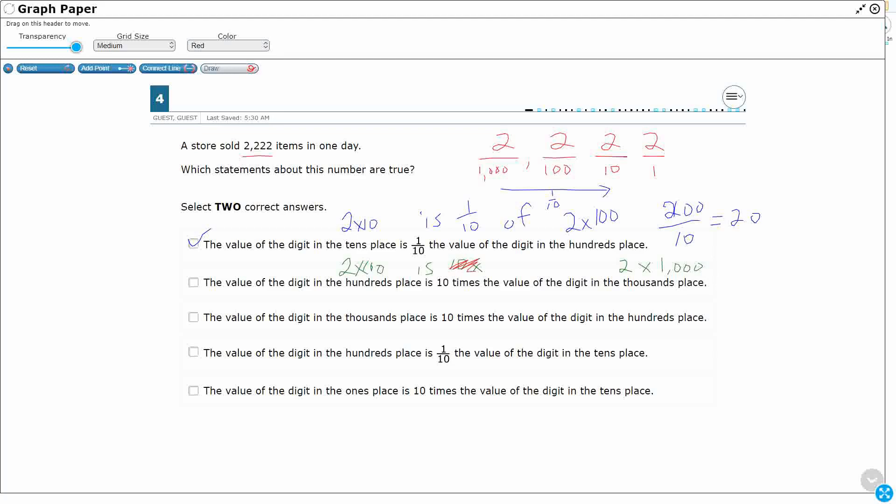If you would have said 1/10th, this 2 times 100 is 1/10th the value of the digit in the 1000s place, because it's missing a zero. Every time you go to the left, you are timesing by 10. Every time you go to the right, you're multiplying by 1/10th. You're making it smaller. You're losing a zero. You add a zero as you go to the left.